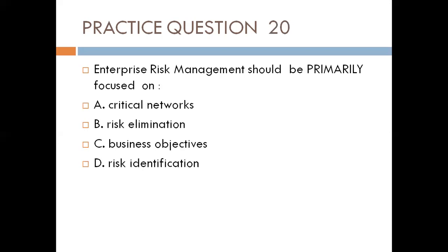Question twenty. Enterprise risk management should be primarily focused on: A. Critical networks, B. Risk elimination, C. Business objective, D. Risk identification. Option A is not complete — what about other assets and infrastructure? Risk elimination is impossible in any system. Risk identification alone is not enough — risk management goes beyond identification. Everything in risk identification, risk analysis, and risk evaluation should revolve around the business objective. So the best answer is C, business objective.